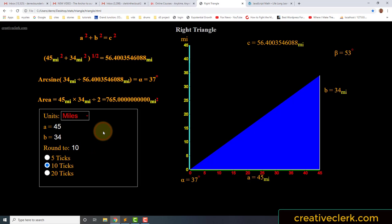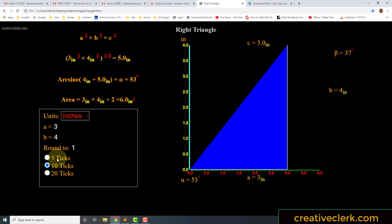But these radio buttons, they determine how many different steps we're going to take or display in the graph. And so they're called ticks in D3, and this is a D3 application. So it just makes it more dynamic.